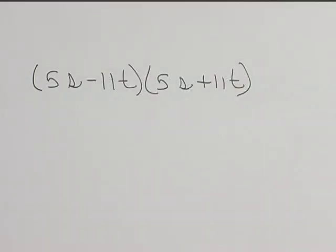Let's multiply the quantity 5s minus 11t times the quantity 5s plus 11t.